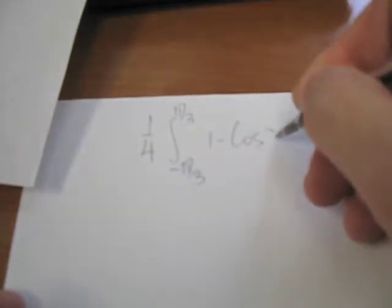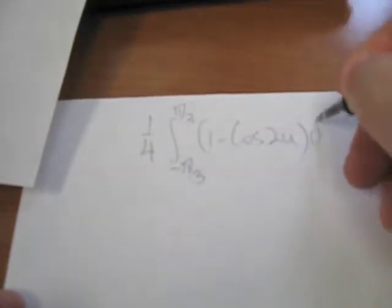So this is where we are at the moment. We have 1 minus cos 2u is what we have to find the integral of. So let's look at doing that integral. We're looking at 1 quarter, the integral of negative π/3 to π/3 of 1 minus cos of 2u du.